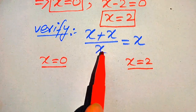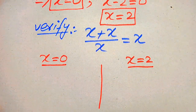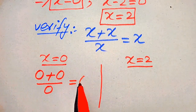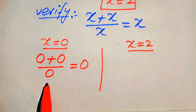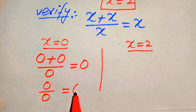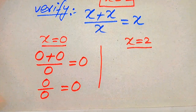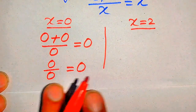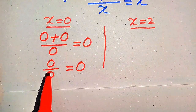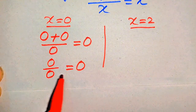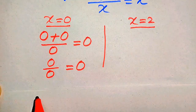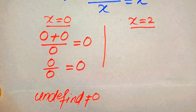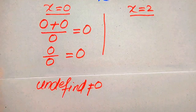First, we put x equals 0 on both sides. This gives us 0 plus 0 divided by 0 equals 0, which means we have 0 over 0 equals 0. But 0 over 0 is called the indeterminate or undefined form, which means both sides cannot be equal because the left side becomes undefined.